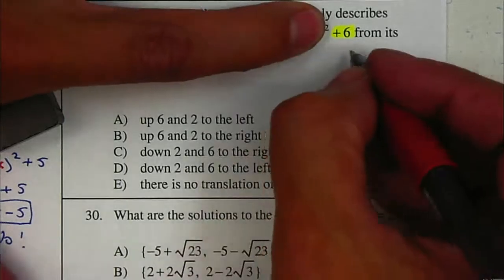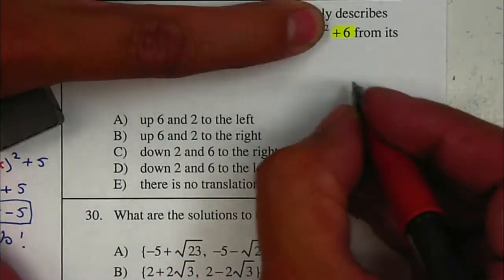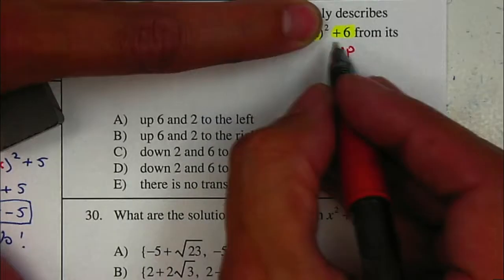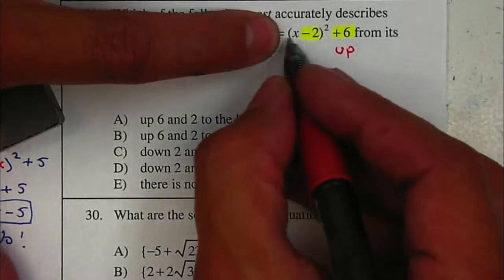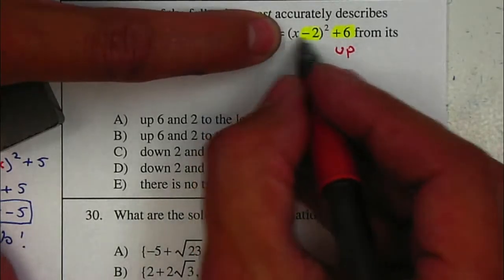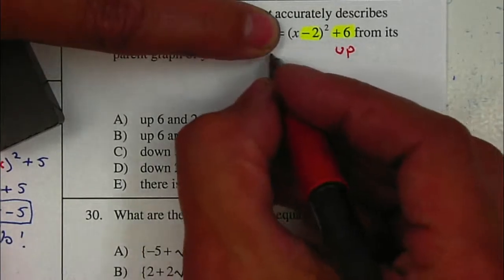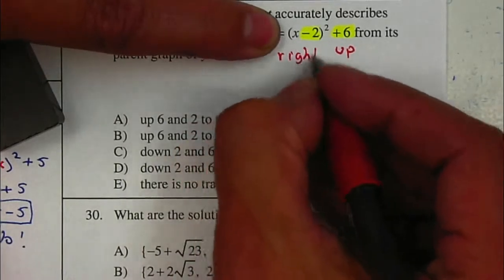If it's outside the parenthesis, it will be shifting either up or down. In this case, it will be up 6. If it's inside the parenthesis right next to the x, it will be left or right. And remember, if it's inside, it's the opposite. This is a negative 2, so therefore it's going to be shifted to the right 2.